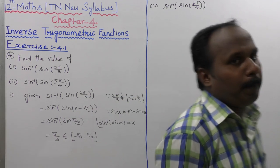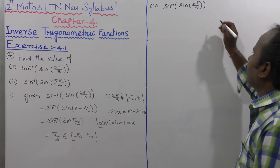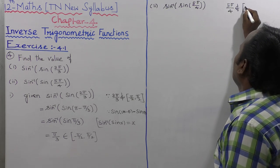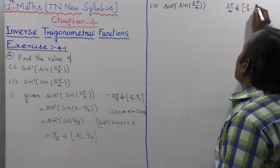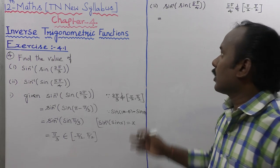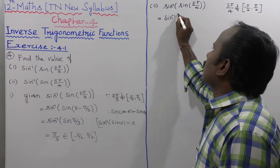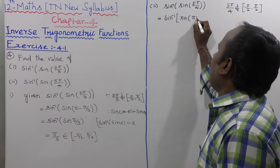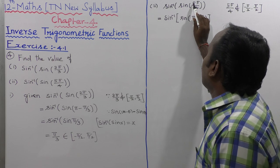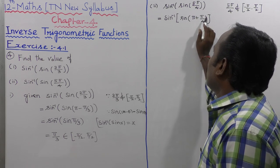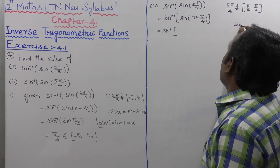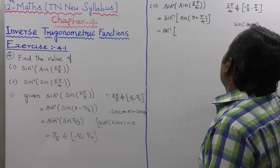For the second part: sin⁻¹(sin(5π/4)). Since 5π/4 does not belong to the closed interval [-π/2, π/2], we cannot directly apply the formula. We rewrite 5π/4 as π + π/4. The formula for the third quadrant gives sin(π + θ) = -sin(θ), so sin(π + π/4) = -sin(π/4).